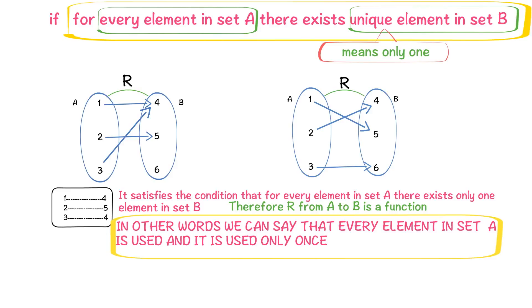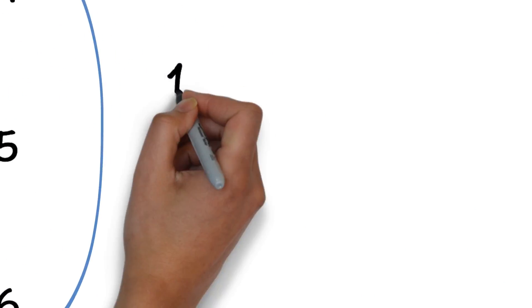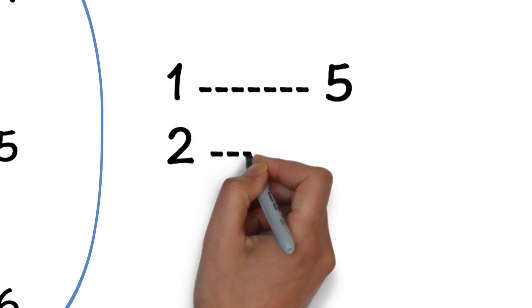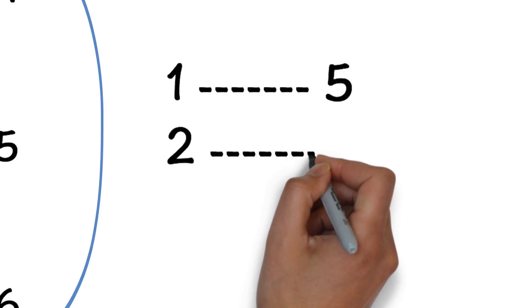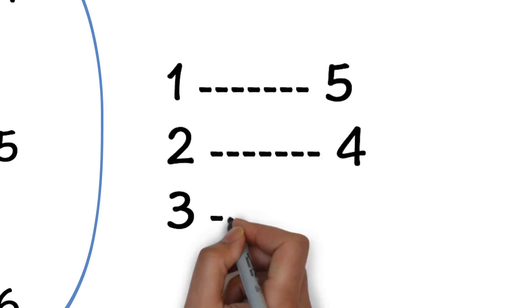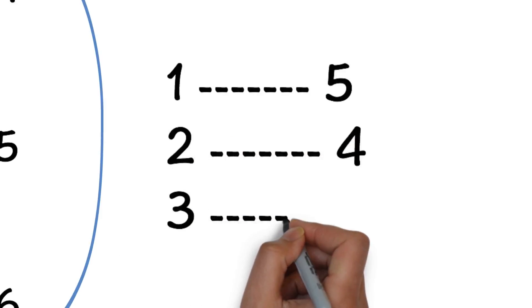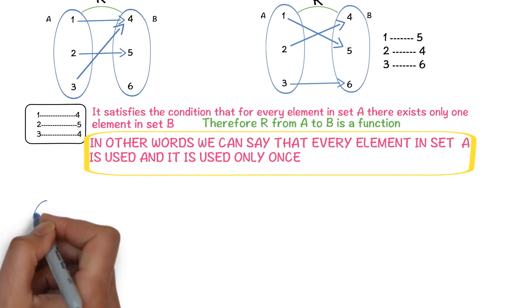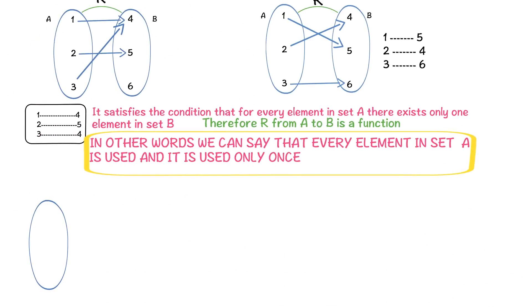You can also observe this: for every element in set A, there exists only one element in set B. For 2, only one element. For 3, only one element. For every element in set A, there exists only one element in set B. So R is a function from A to B.